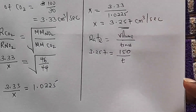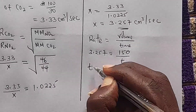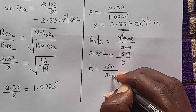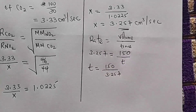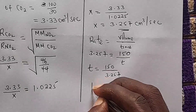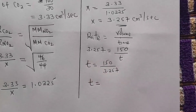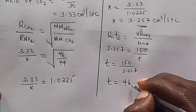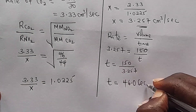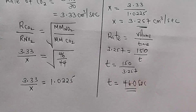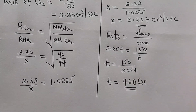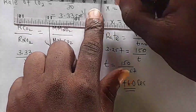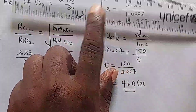So time = 150 ÷ 3.257 = 46.0 seconds. Learners, you can use these two methods and still get the same answer. So we have method one and method two.